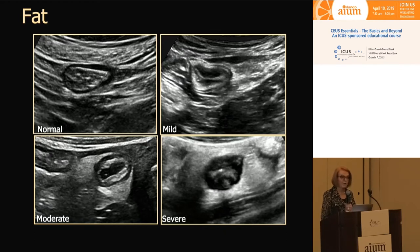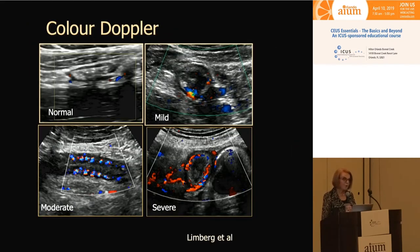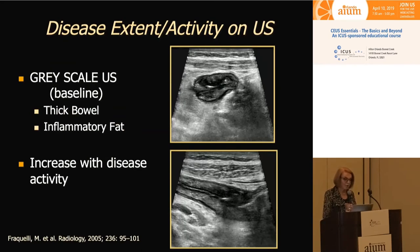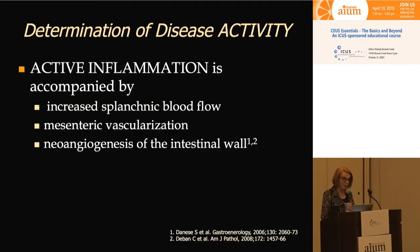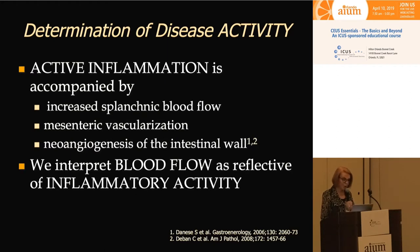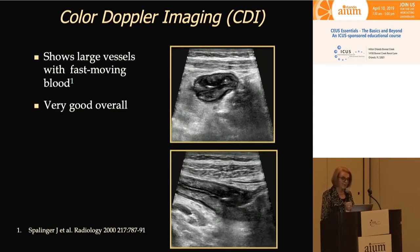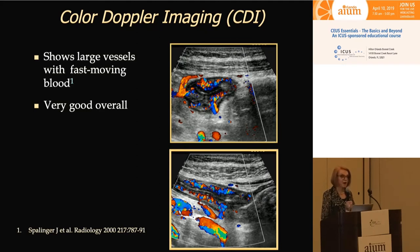Inflammatory fat in the upper left picture is not really showing inflammatory fat, whereas the bottom picture shows a big mass of echogenic fat — more severe disease. Color Doppler goes from no color to virtually transmural blood flow, even on color Doppler. The most important thing, of course, is blood flow. If we look at a patient with thick bowel on ultrasound, we know that active inflammation is accompanied by increased splanchnic blood flow, mesenteric vascularization, and neoangiogenesis of the intestinal wall. We interpret blood flow as reflective of inflammatory activity.